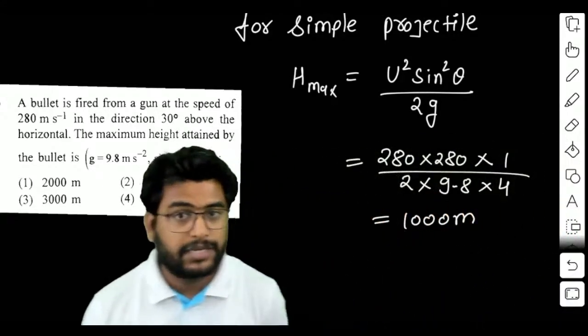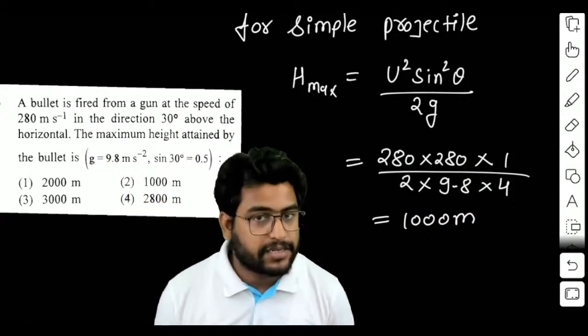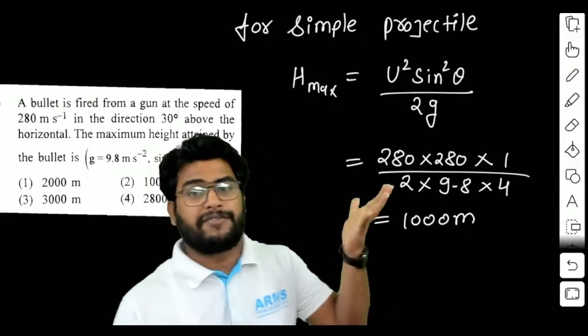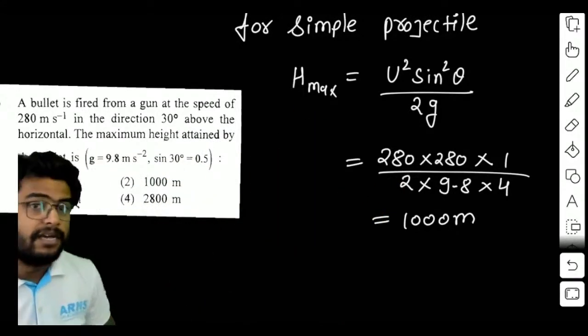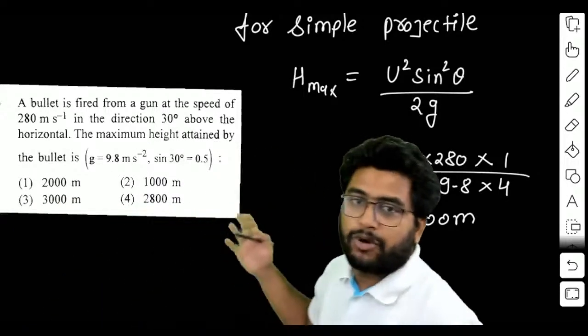The formula for maximum height is U squared sin squared theta divided by 2g. If you use it, it's very easy. Substituting the values, we are given 280 meters per second at an angle of 30 degrees.